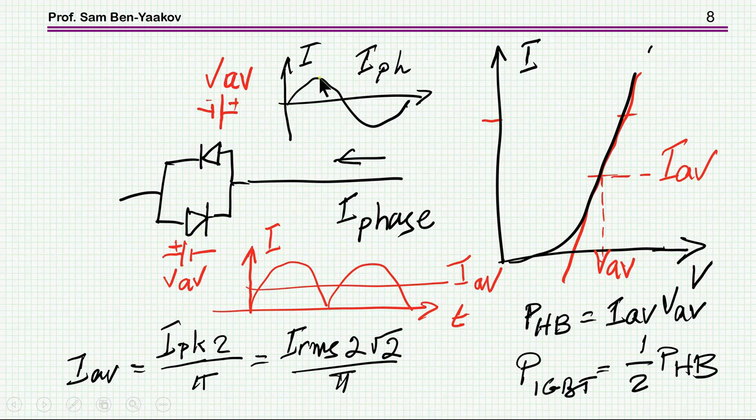So we have a phase current, which is going into these two diodes, which are characterized by sort of an average current. This is like a slope here, and I'm talking the average current and the average voltage, and the power dissipation of this whole assembly, the two of them, will be the average current. This is the current of the phase rectified, and this is the average, and multiplied by the average voltage corresponding to the average current.